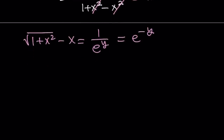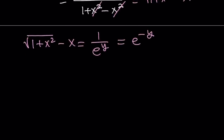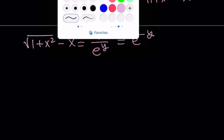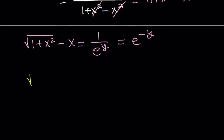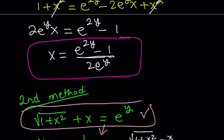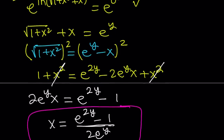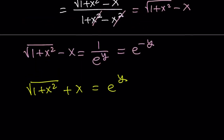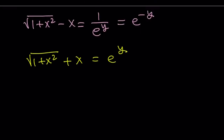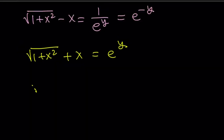At this point we can set up a system and solve for x that way — that's what makes this approach different from the first one. So let me rewrite my first fact: square root of 1 plus x squared plus x equals e to the power y. That was my first expression from the first method. And we have another equation from the reciprocal: square root of 1 plus x squared minus x equals e to the power negative y. So this is my system of equations and I'm going to solve this system with the goal of finding x.